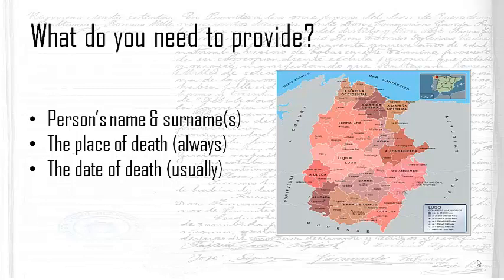The place of death is extremely, extremely important when ordering a death certificate in Spain. And last but not least, you need to know the date of death. If you're ordering from a small municipality, an approximate year or even a range of years may be sufficient — if the person in the civil registry is feeling generous, they will search a couple of years on either side.